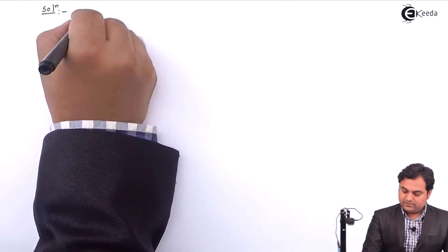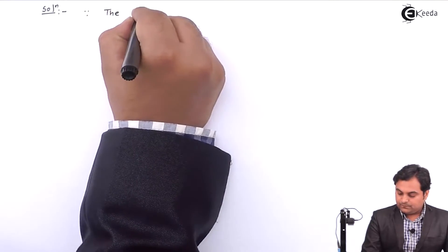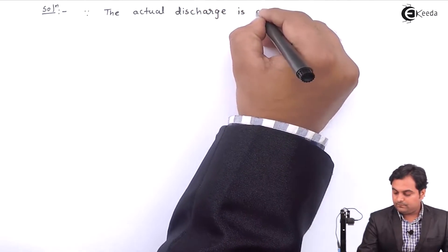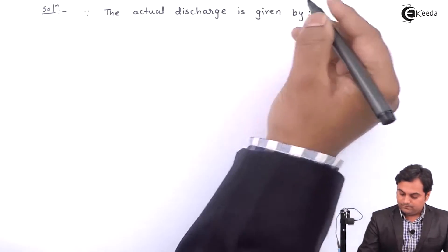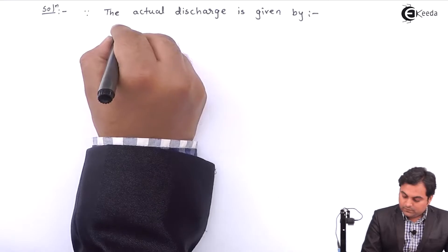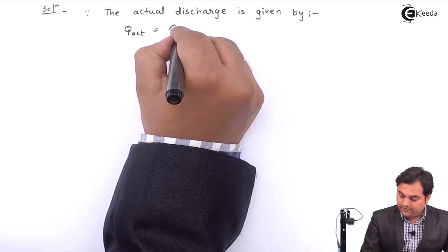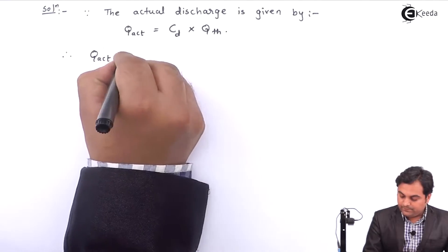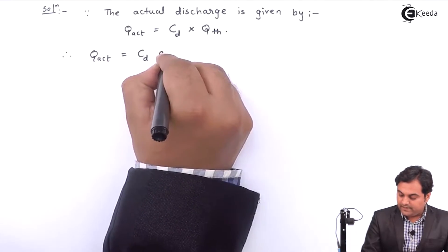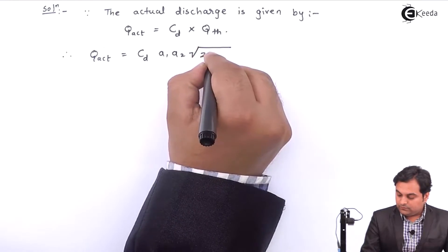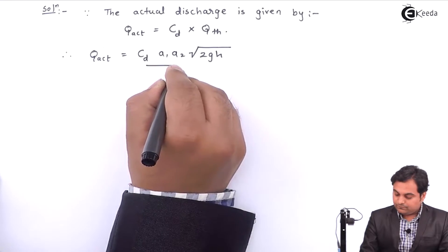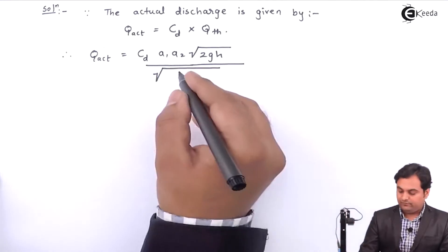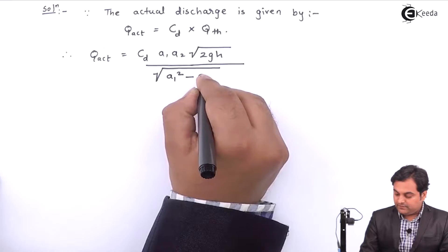Now I will start with the solution. The actual discharge Q actual is equal to CD multiplied by Q theoretical. Therefore Q actual equals CD into A1 times A2 times root of 2gH divided by root of A1 squared minus A2 squared.